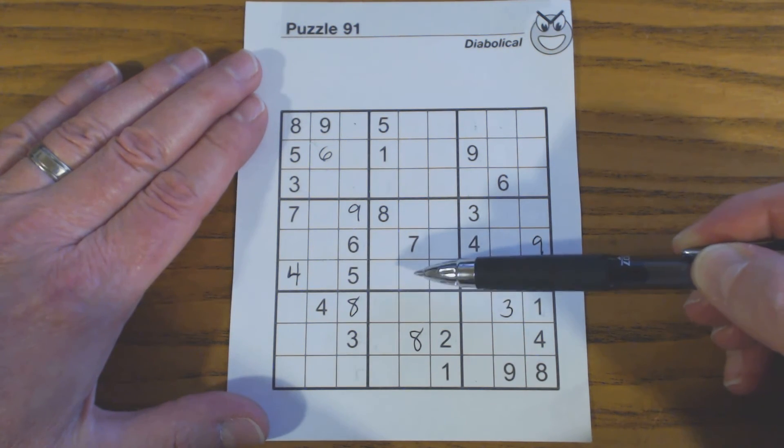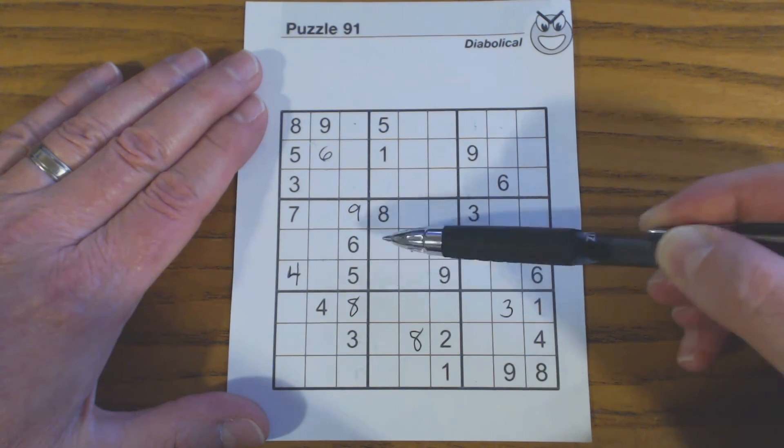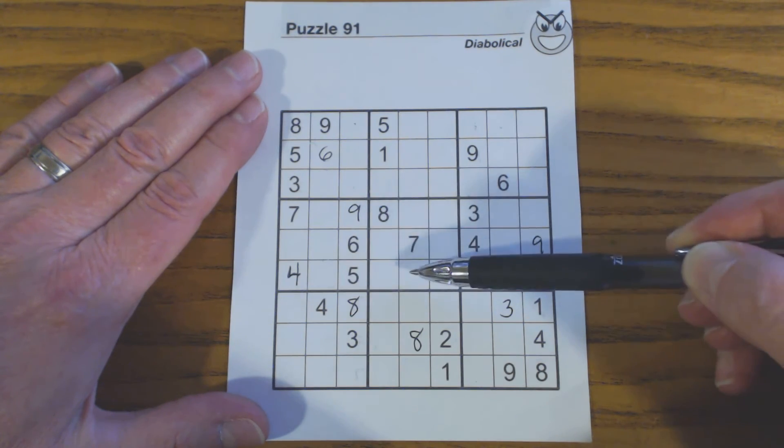So what do we have here? 1, 2, 3, 7, 8. So that is a 1.